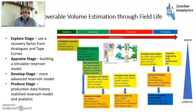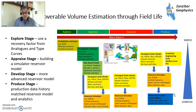As you develop, you get more data, gain more complicated reservoir modeling. When you start producing, you start getting real production data, so you can now build a history match — you can match your model to the realistic data and get a much better estimate. But when you're in the exploration appraisal stage, you don't have any of that, so you have to make a lot of guesses.